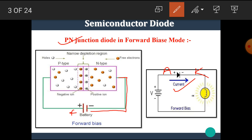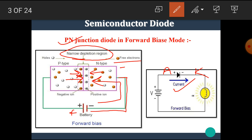What happens in forward bias mode? The N-type region contains the majority of electrons, and electrons have negative charge. These negative electrons are repelled by the negative terminal of the battery towards the junction. Similarly, holes are repelled by the positive terminal towards the junction. This causes a reduction in the width of the depletion layer, and hence a current flows through the diode. Above the value of the barrier potential, the diode starts conducting.